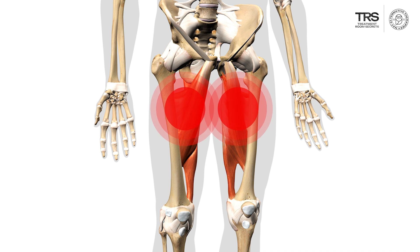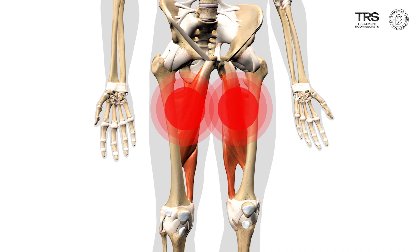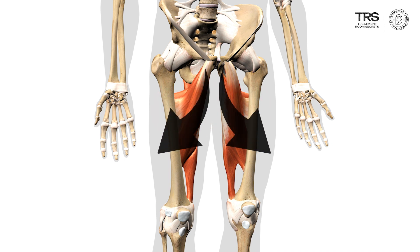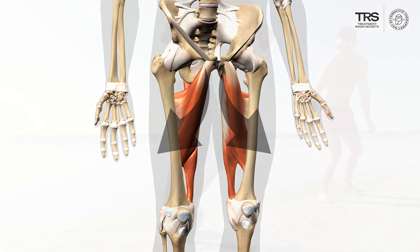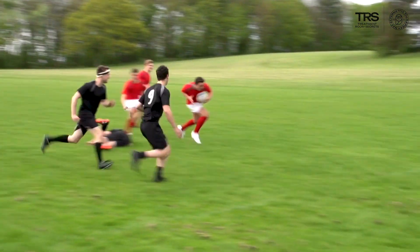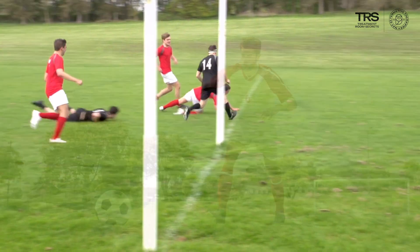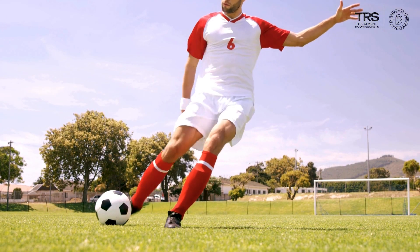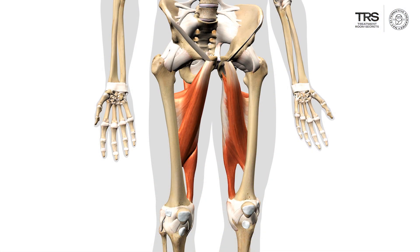You will injure your adductor muscle playing sports or doing activities which pull the leg outwards suddenly. Very common sports include soccer, rugby, or any sport involving jinking movements from side to side. In soccer in particular, a player will kick against the ball and somebody else kicks against it too, creating a huge pulling movement on the inner side of the thigh. So adductor injuries are very common in soccer.